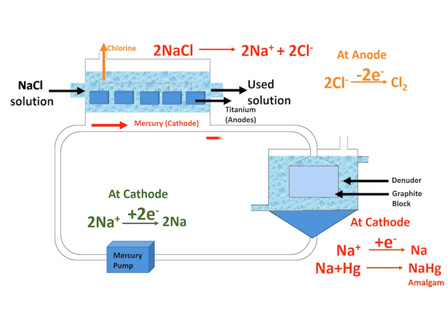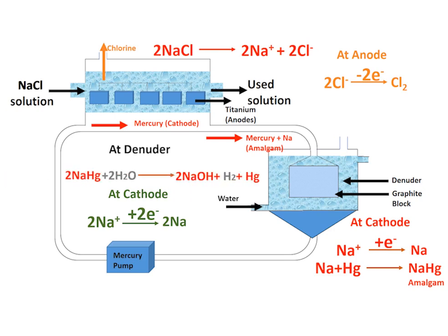Reduction of cations results in sodium metal which then combines with mercury forming amalgam. The amalgam flows to the lower chamber. At the denuder, sodium from amalgam reacts with water resulting in sodium hydroxide and hydrogen gas, both collected separately. Hydrogen gas is easily liberated over the graphite surface. The solution of sodium hydroxide is evaporated to dryness, and mercury is recycled and pumped to the upper chamber for the production of the next batch.